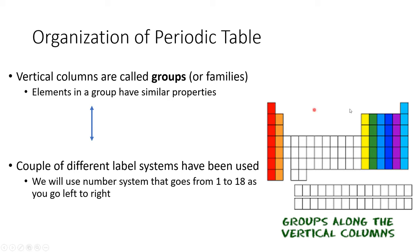We'll keep it simple and use the numbering system 1 through 18, with 1 on the left-hand side and 18 on the far right. Just note there are different systems — some use A's and B's. The A's refer to the main groups: 1A, 2A, then hopping across to 3A through 8A. In the middle we'd have 3B through 12B. If you see another video referring to 1A, 7A, or similar — we're just going to do 1 through 18 straight across. The key thing is that groups are where we see similar chemical properties.